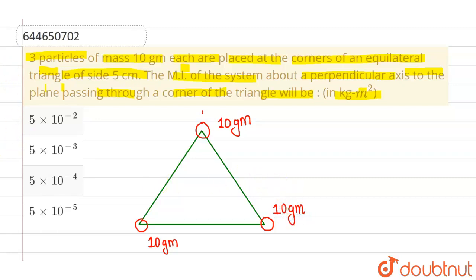Now we have to find out moment of inertia about axis passing through one of the corner and perpendicular to the plane. So let's say this is the axis. Now for this, let's say first particle, this is second particle, this one is third particle.